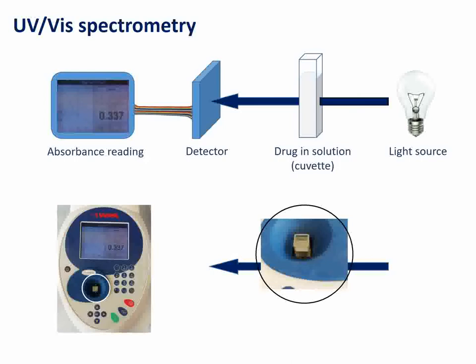Larger, more expensive UV-vis spectrometers may actually have two holders for two different UV cuvettes. In one you would have a reference containing just the solvent with no drug, and in the other a test cuvette with the drug in solution. The spectrophotometer shines two beams through the two cuvettes simultaneously and subtracts one reading from the other. But in effect you end up with the same result — a reading telling you how much light the drug is absorbing.